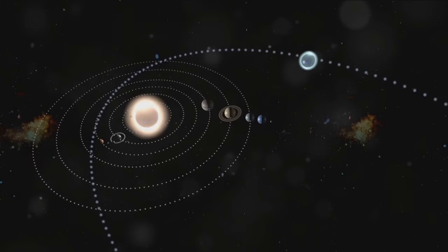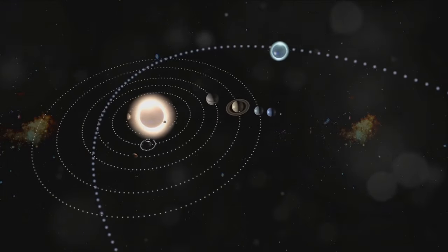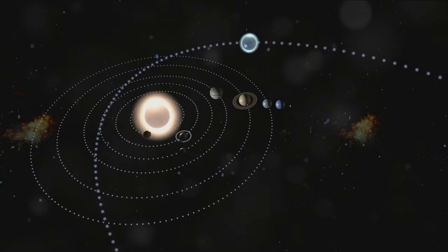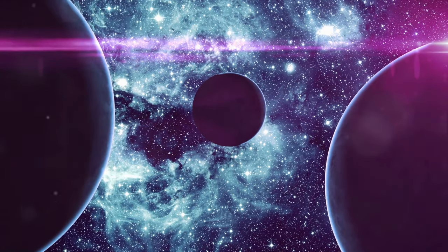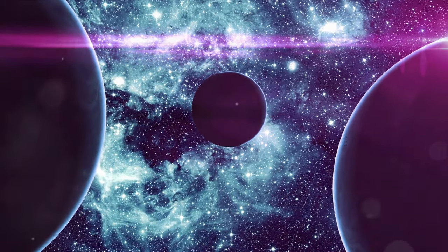The problem is deceptively simple to state. Given the initial positions and velocities of three bodies in space, predict their motions as time progresses. Sounds straightforward, right? But the devil, as they say, is in the details.